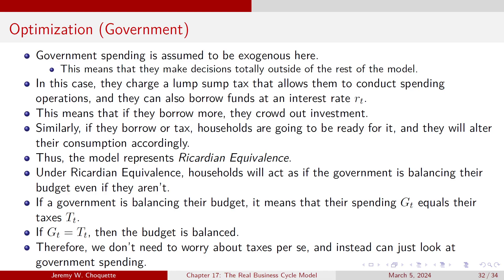Government spending is assumed to be exogenous. The government takes a lump sum tax — and under Ricardian equivalence, whether they borrow or tax, households are already prepared for it and alter their consumption accordingly. If the government's balancing their budget, spending G equals taxes T — that would be a balanced budget. In that case, we don't really need to worry about taxes and can just look at government spending.